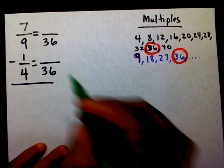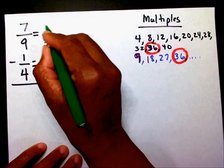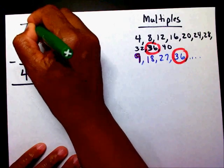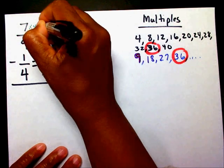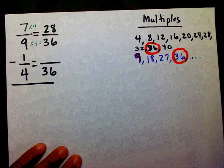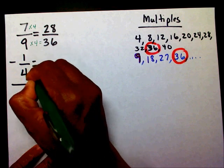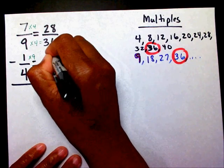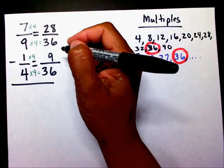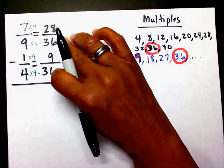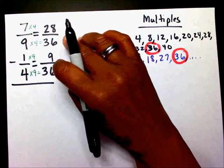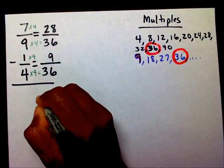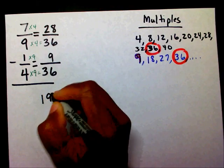Now let me find my new numerator. Nine times four is thirty-six, and seven times four is twenty-eight. Four times nine is thirty-six, and one times nine is nine. Now that I have like denominators, I'm going to subtract twenty-eight minus nine, and that's going to give me nineteen over thirty-six.